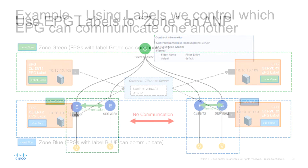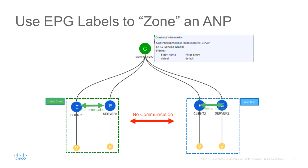Effectively, in the demo we have all these EPGs on the same application network profile consuming the same contract, but we will see that we can isolate communication and make sure that client 1 and server 1 cannot communicate with client 2 and server 2. Let's look at the demo.